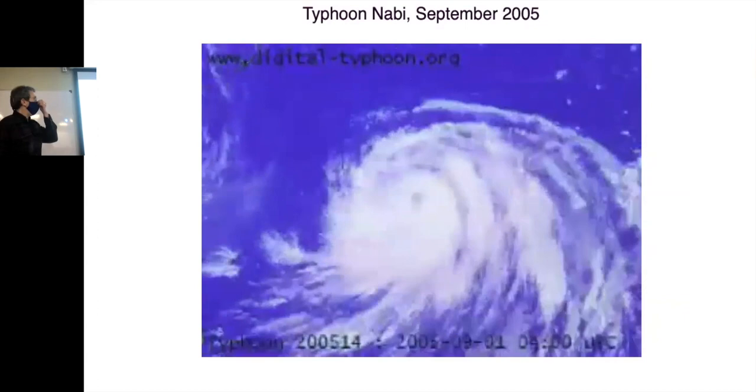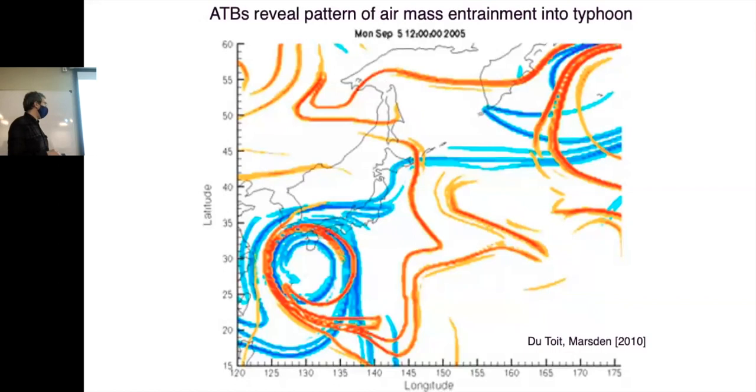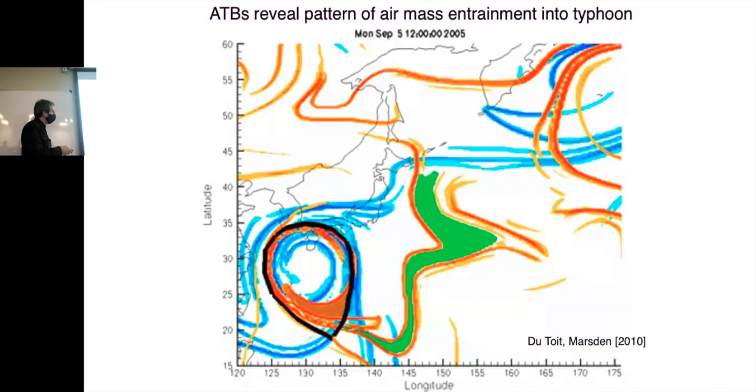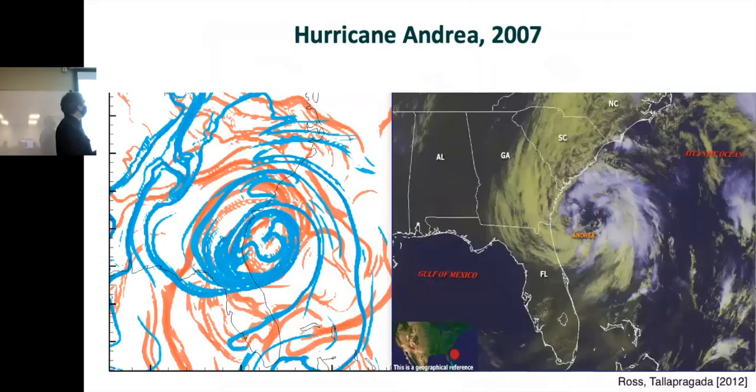Here's a typhoon that's hitting Japan. And then this is a snapshot of what the velocity field looks like. If you do a computation and find repelling and attracting structures, you could identify a vortex core and also identify air that's going to be detrained and then also entrained into the vortex. So how could this be useful? Well, if you know that the air that's going to be entrained is moist air, then it'll be feeding a typhoon or hurricane. It's dry air. It won't.